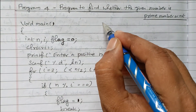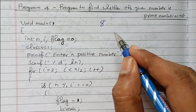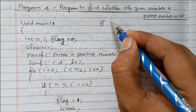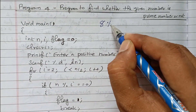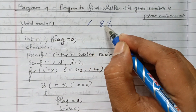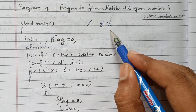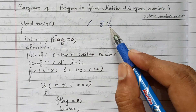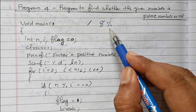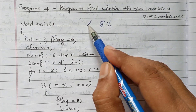We will take one example. If you take the number 8, how do we find whether it is divided or not? We use the percentage operator. The division operator gives the quotient; the percentage operator gives the remainder value. This is called modulo division — it gives the remainder value.